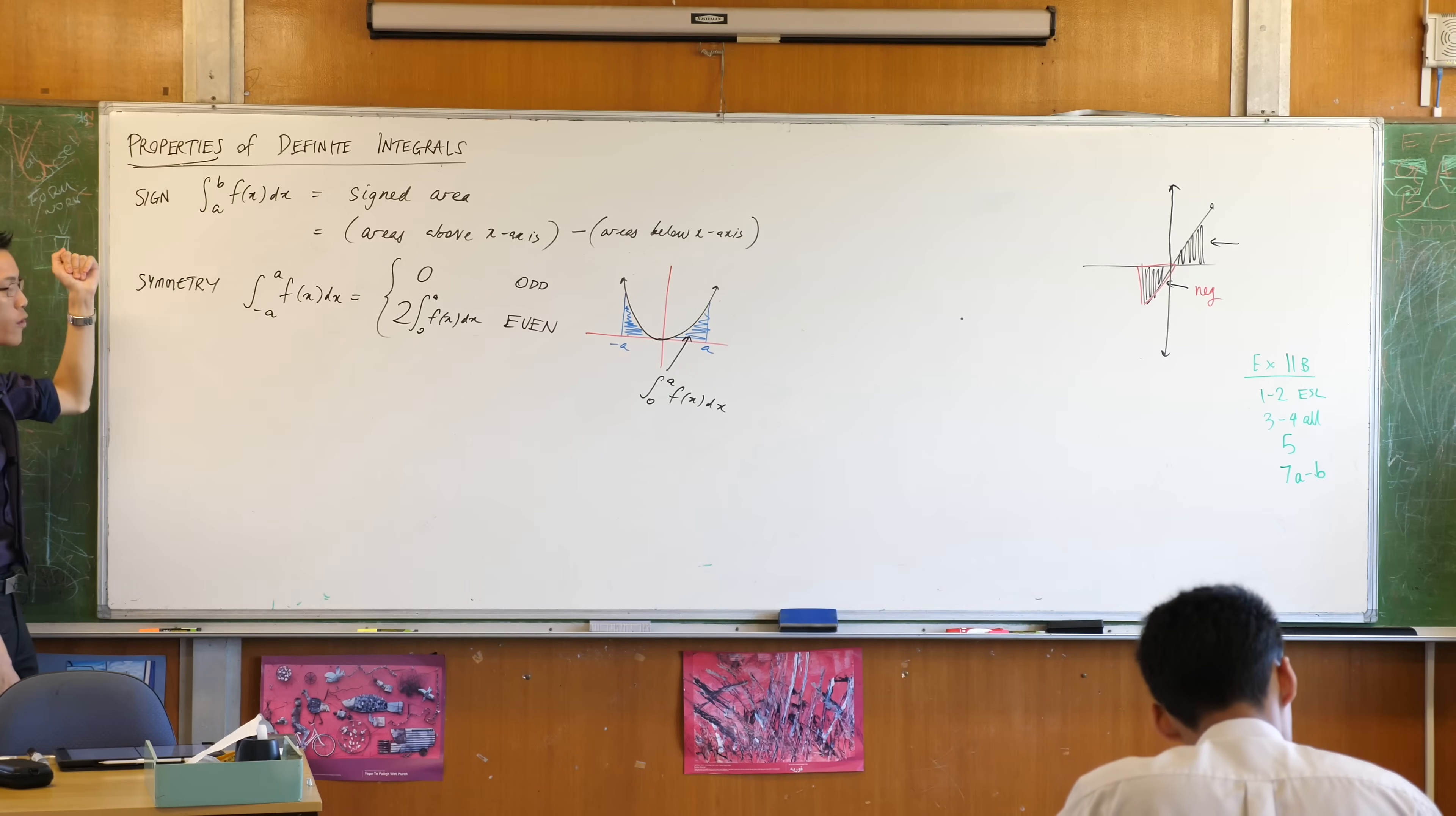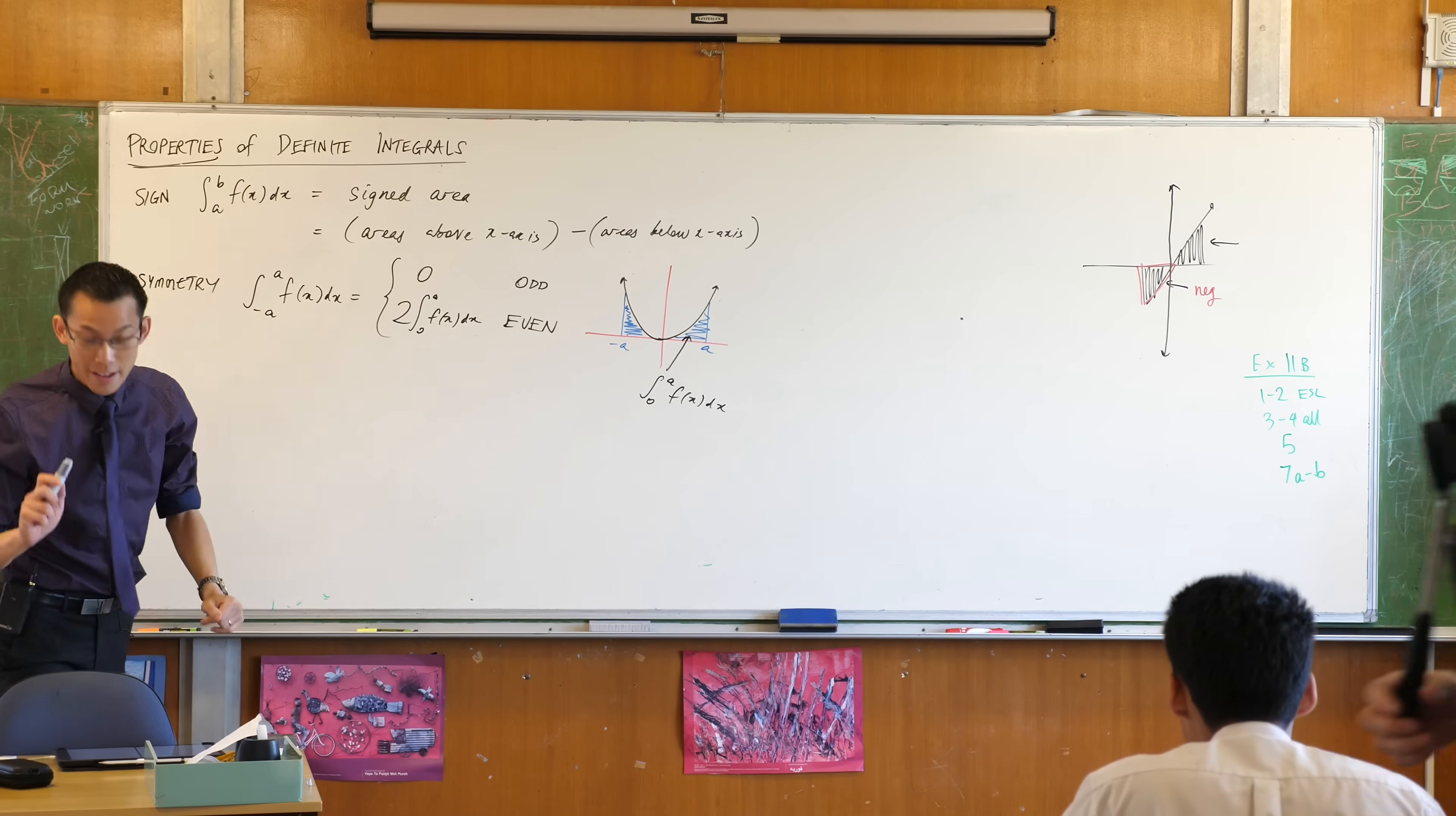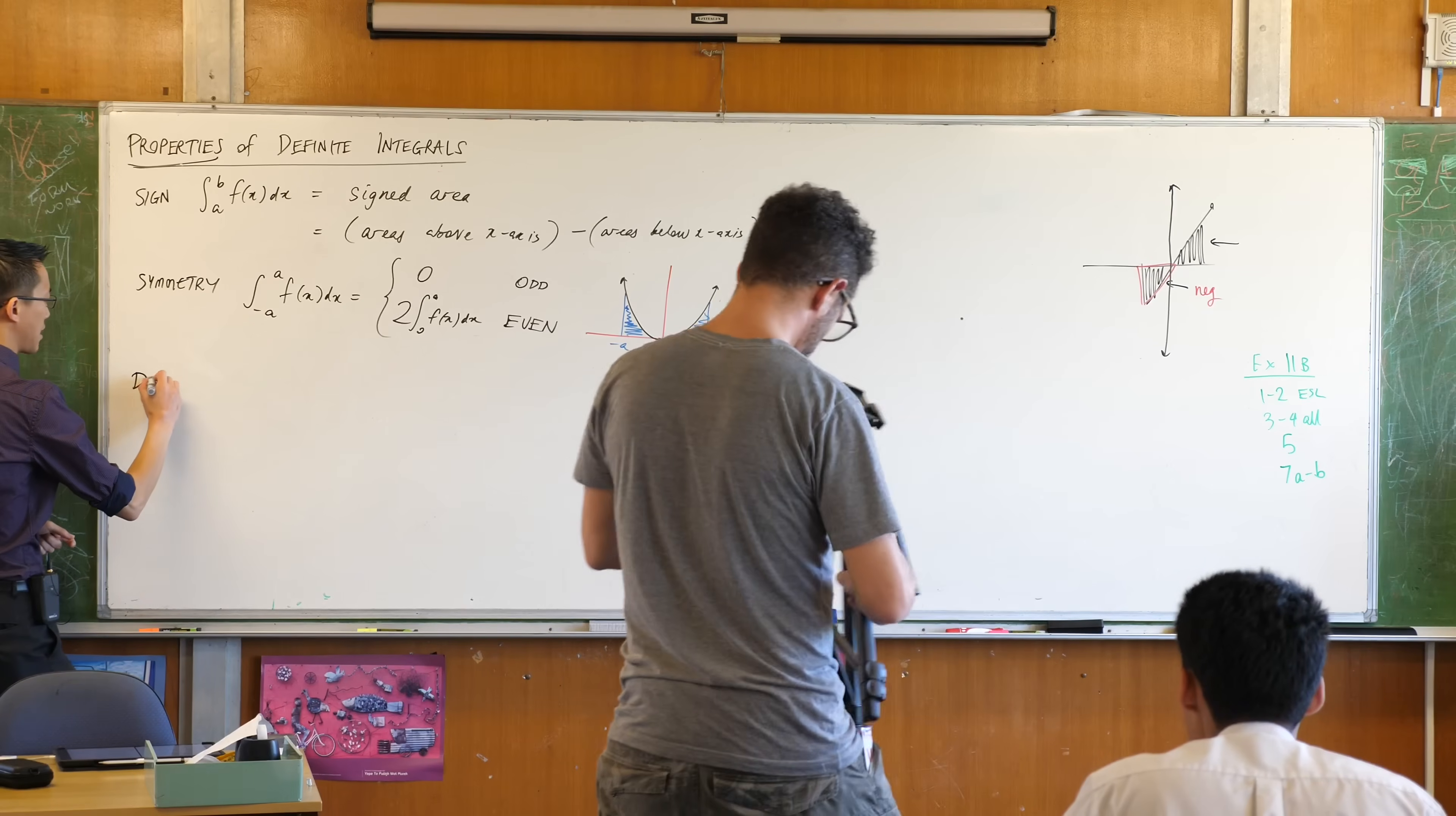So we have a property about sign. We have a property about symmetry. The next property I've called dissection.